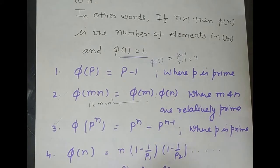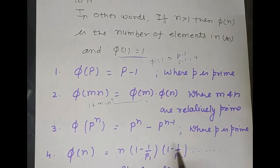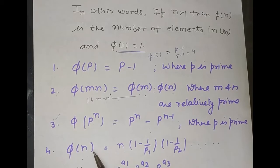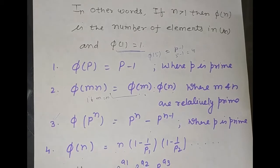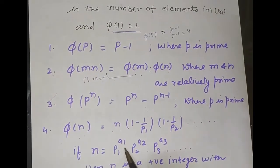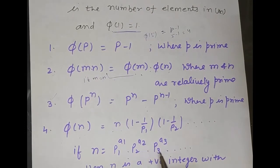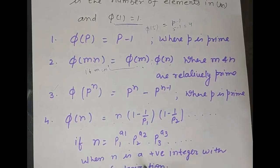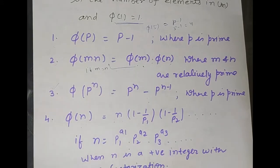If you don't remember the first, second, or third formula, this general formula is: φ(n) = n · (1 − 1/p₁) · (1 − 1/p₂) · ... where p₁, p₂, p₃ are the prime numbers in the prime factorization of n. That is, n = p₁^a₁ · p₂^a₂ · p₃^a₃, where n is a positive integer.